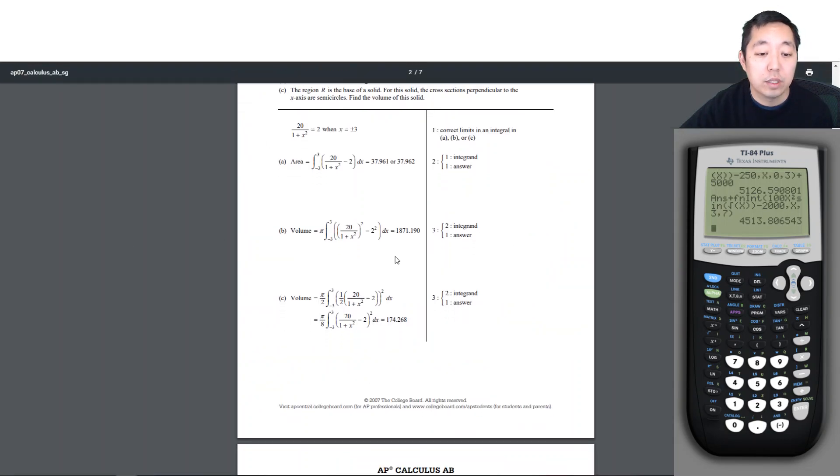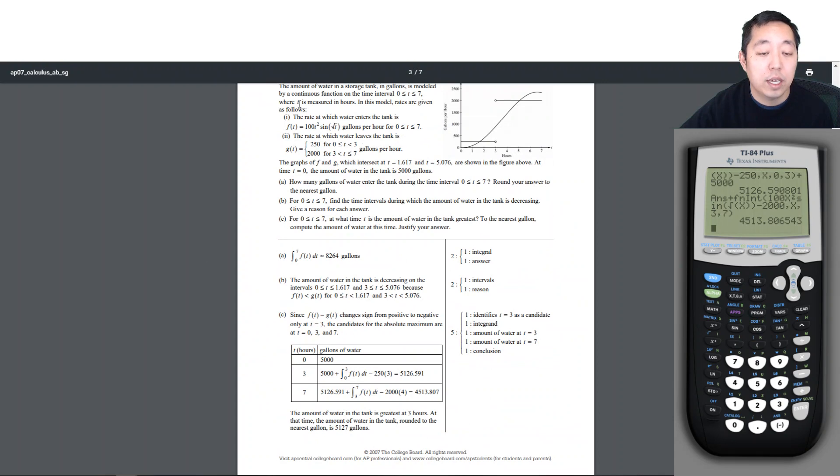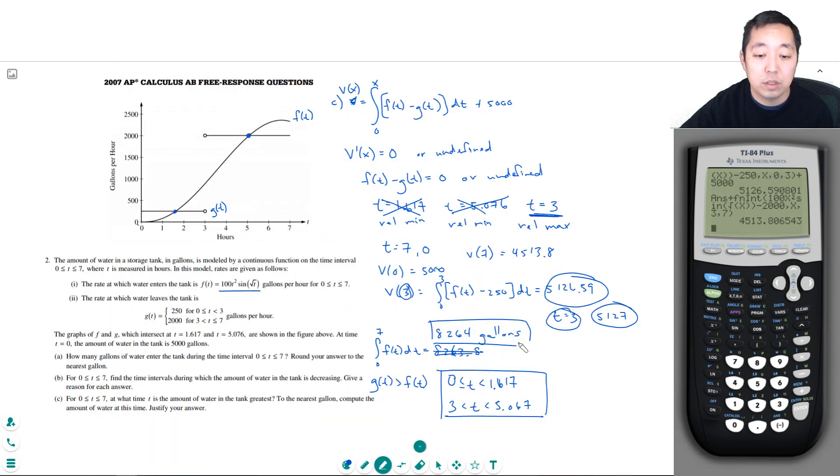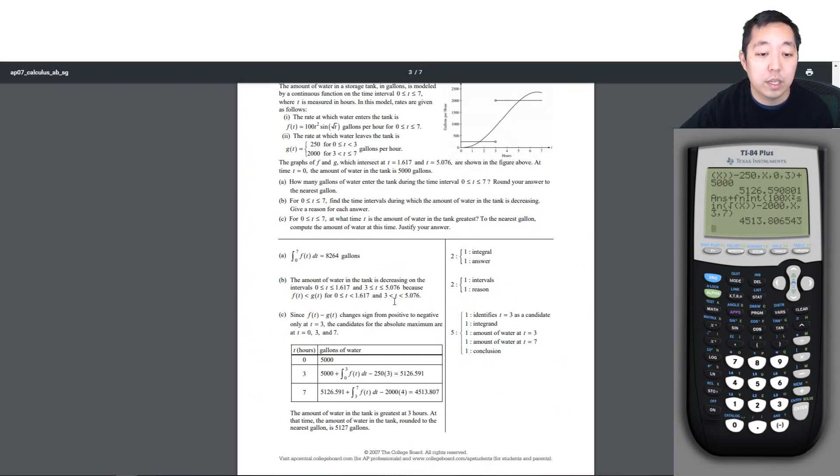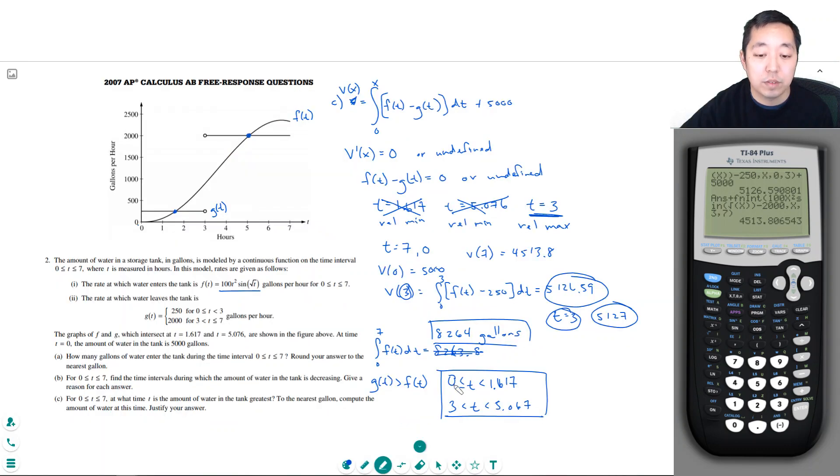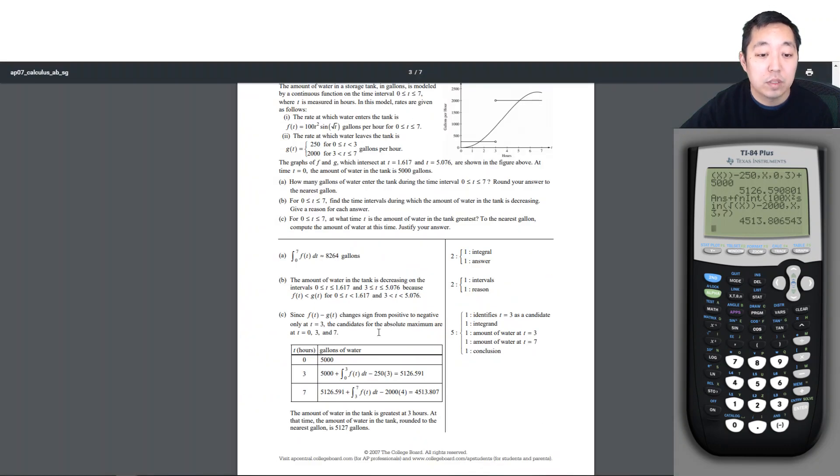Let's take a look at what the solutions look like for this one. 8264 is part A. Part B is 0 to 1.673 to 5.067. Good. Since the absolute maximum candidates are 0, 3, and 7. And we did the calculations. 0 is 5,000. 3 is 5,127. The amount of water is greatest at 3 hours. At that time, the amount of tank rounded to the nearest gallon is 5127.